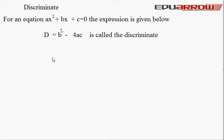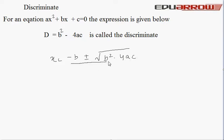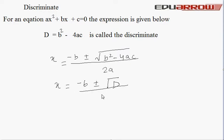The quadratic formula is x = (−b ± √(b² − 4ac)) / 2a. This formula can also be represented in the form x = (−b ± √D) / 2a, where D is the discriminant.